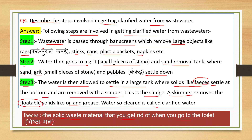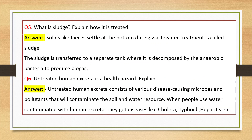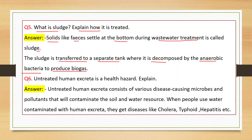Question number five: What is sludge? Explain how it is treated. Solids like feces that settle at the bottom during wastewater treatment are called sludge. Sludge is transferred to a separate tank where it is decomposed by anaerobic bacteria - bacteria that do their work in the absence of oxygen - to produce biogas.